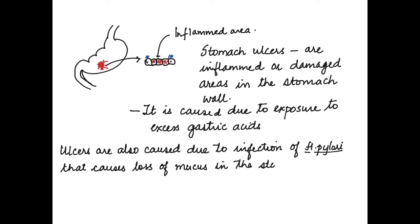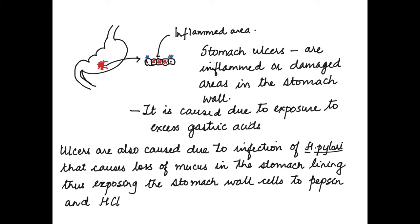Now this Helicobacter pylori is responsible for the loss of mucus in the stomach lining, and when there is loss of mucus in the stomach lining it leads to the acids being in contact with the cells, leading to ulcers. So here the acid as well as pepsin also affects it.